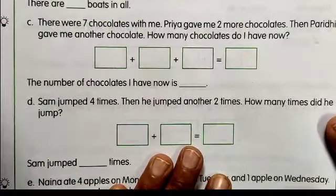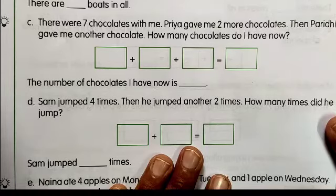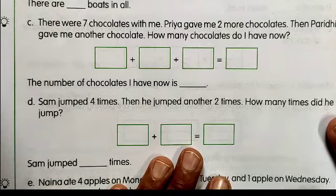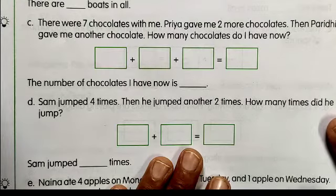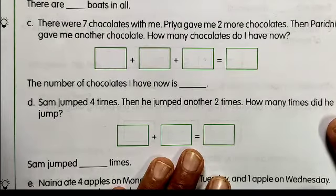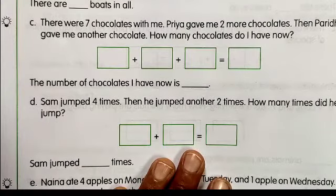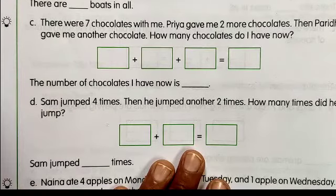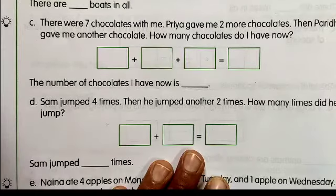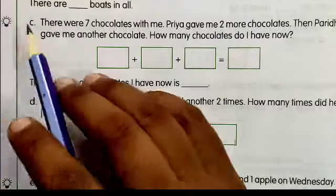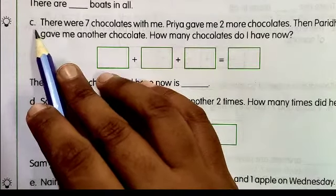Hello students, good morning everyone and welcome to the maths class. Today we are starting with worksheet number 24 that we learned in our previous lecture — how to solve the addition word problem. Addition word problems we solve using RFWS: Read the sentence, Find the addition word, Write the sum, and Solve the problem. Now today we will solve worksheet number 24, question number C.